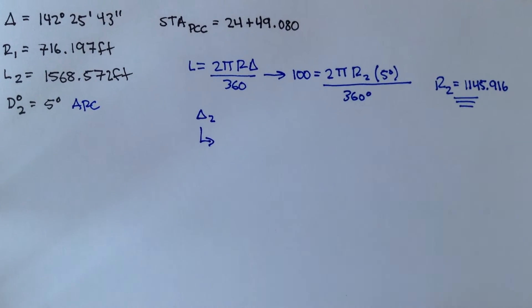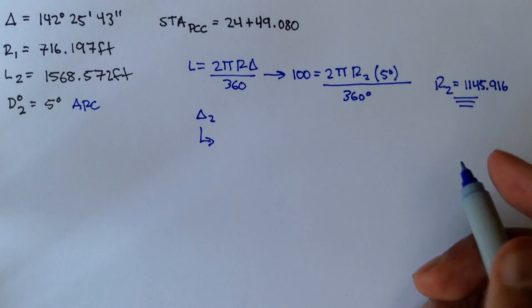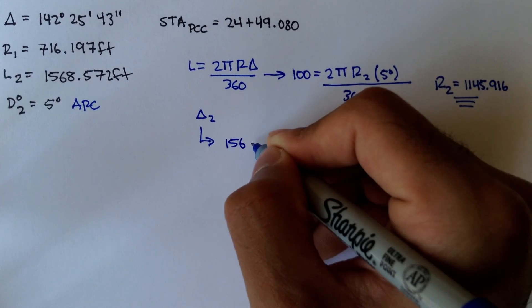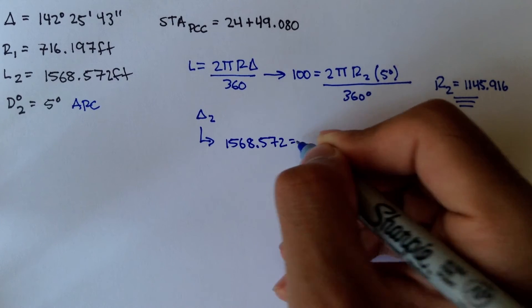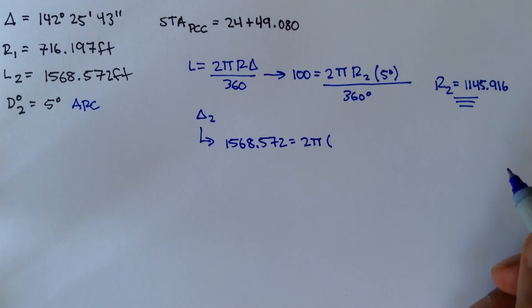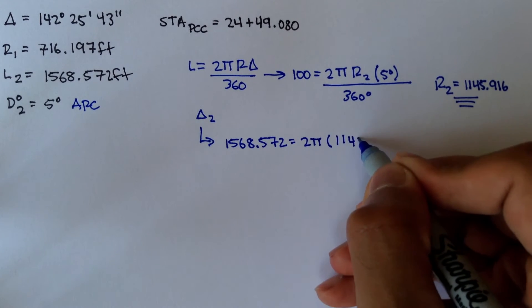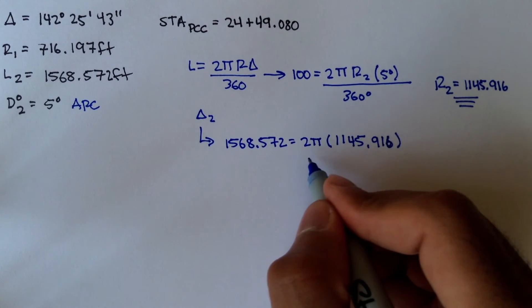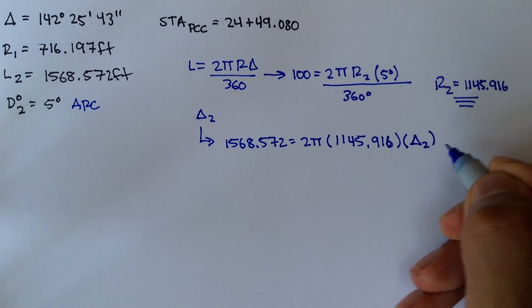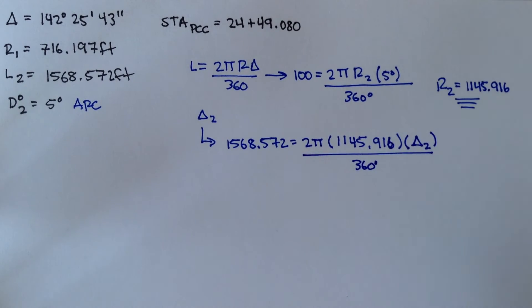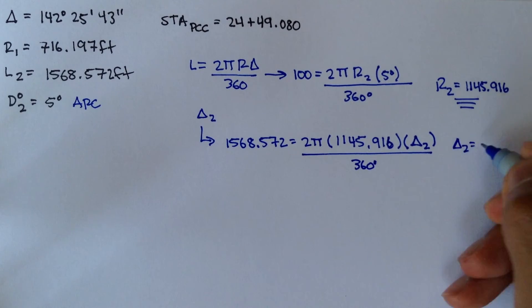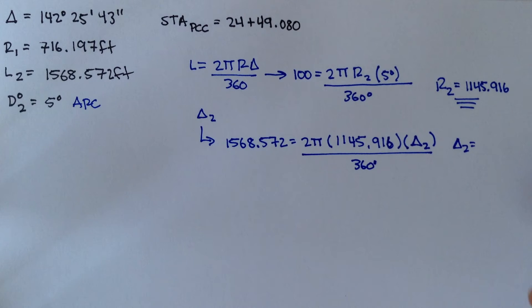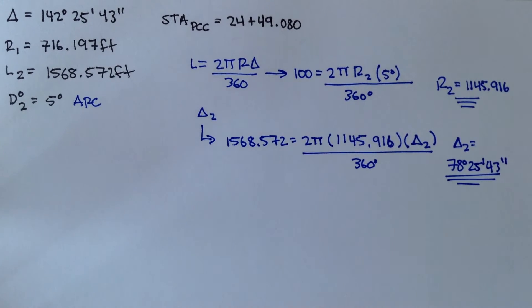So to find delta 2, we can use the same formula. The length of curve 2 is given, 1568.572. So we plug that in, 1568.572. That's equal to 2 pi radius of curve 2, which we just figured out. It was 1145.916. And that times delta 2 divided by 360 degrees. And delta 2, if we put this into our calculator, delta 2 is 78 degrees 25 minutes and 43 seconds.